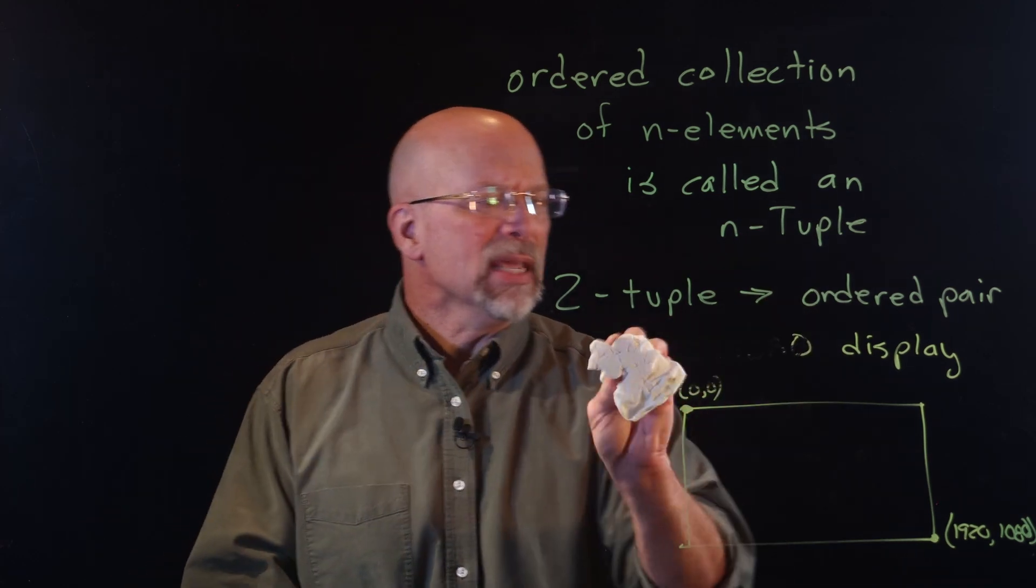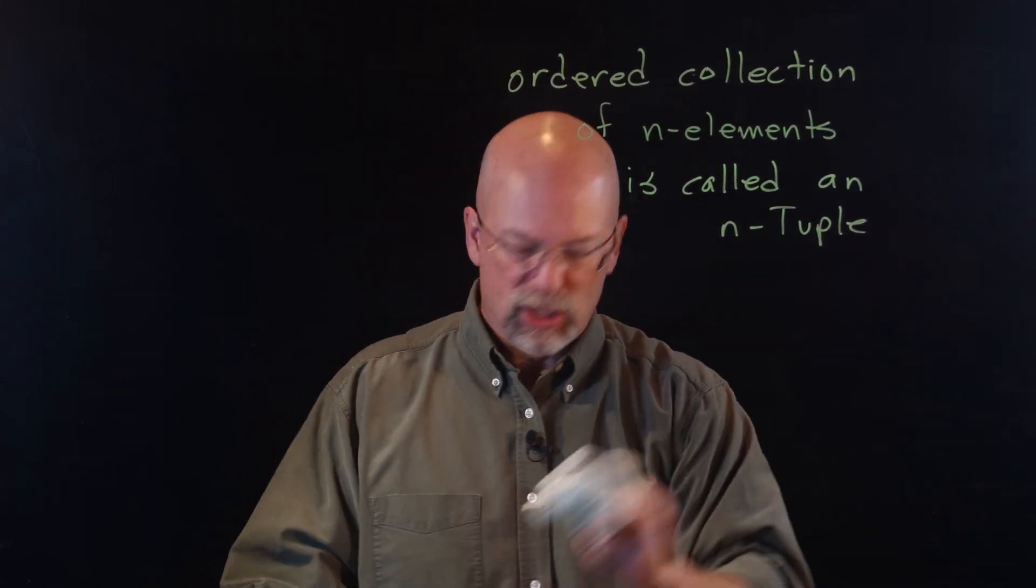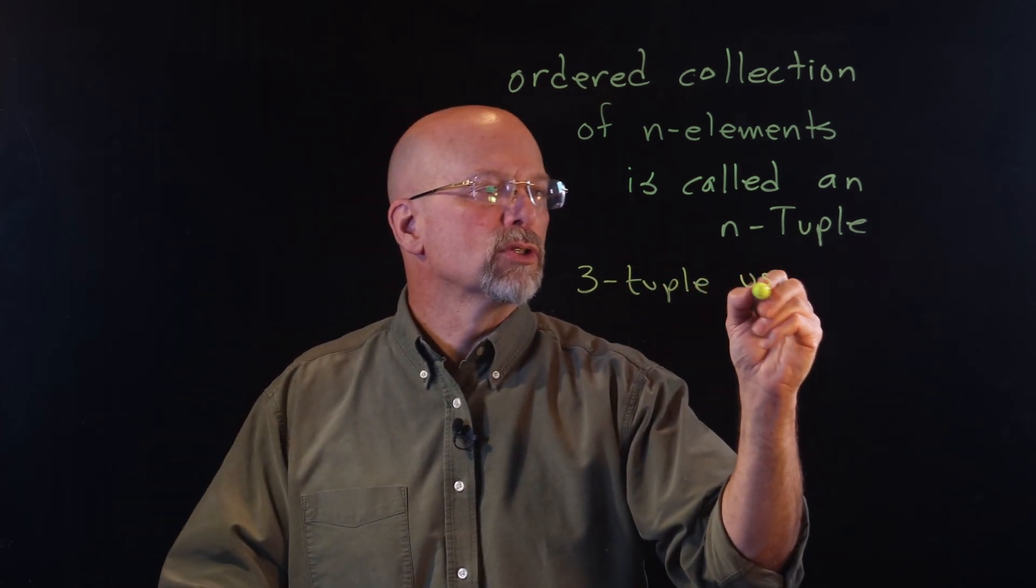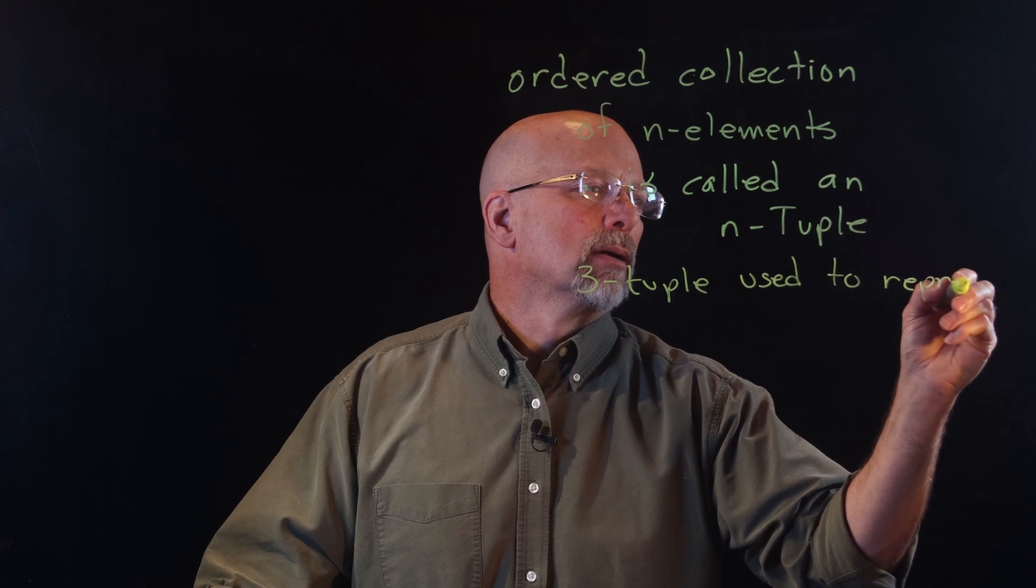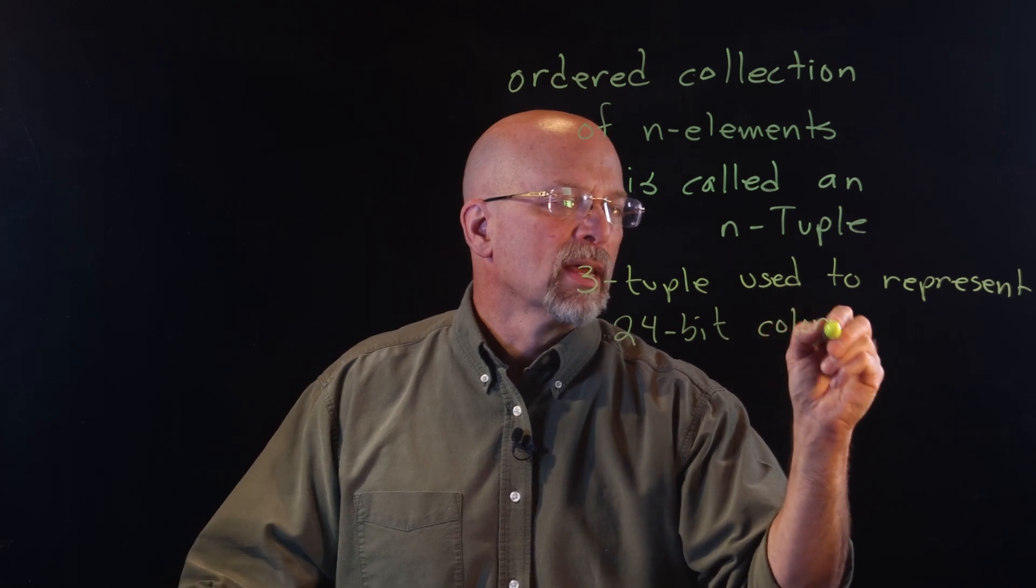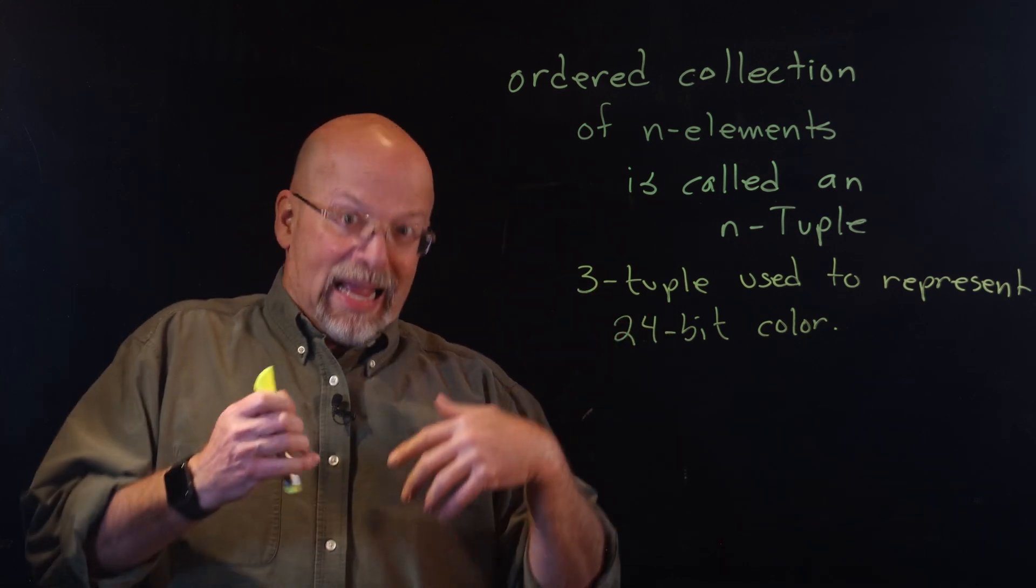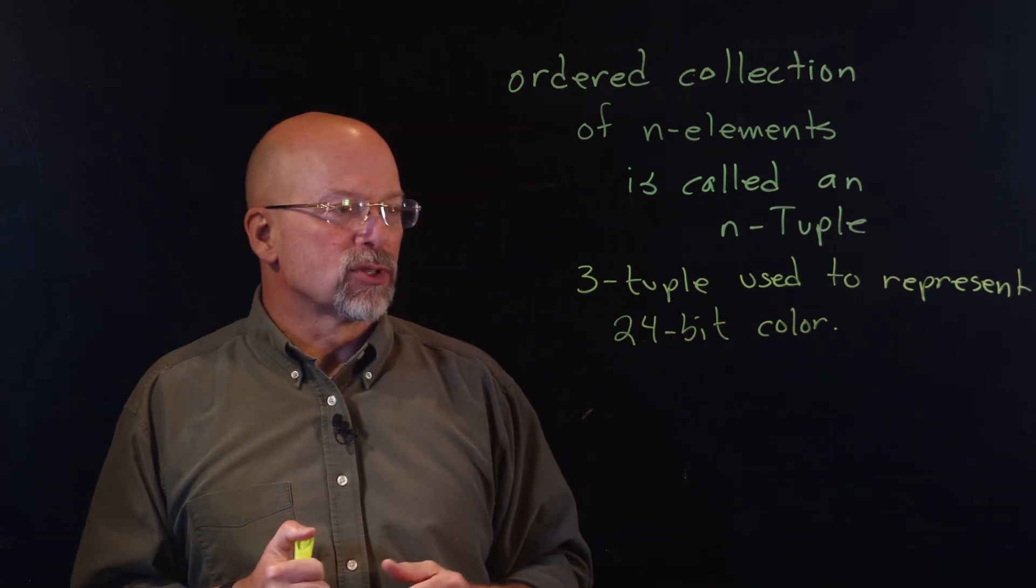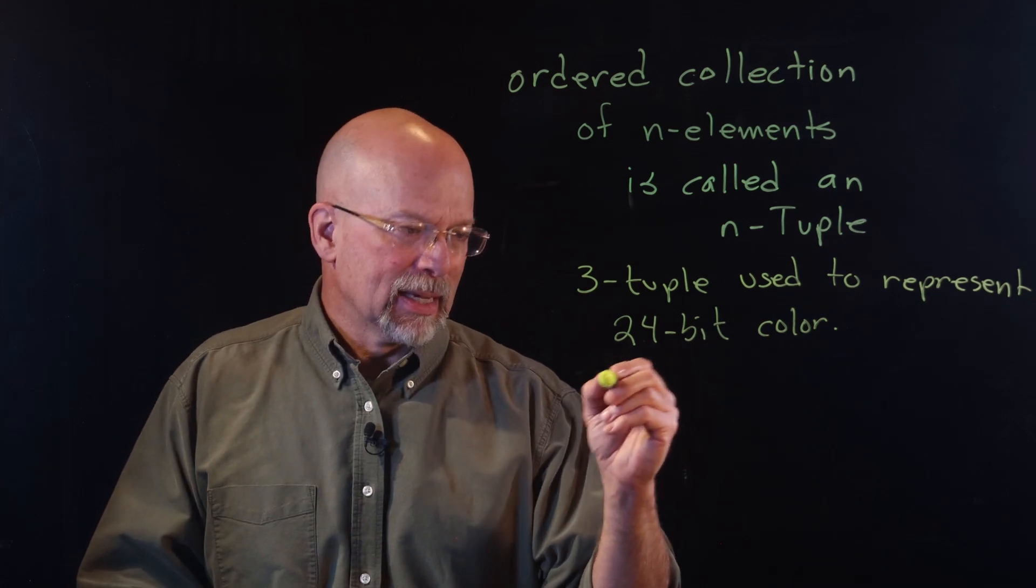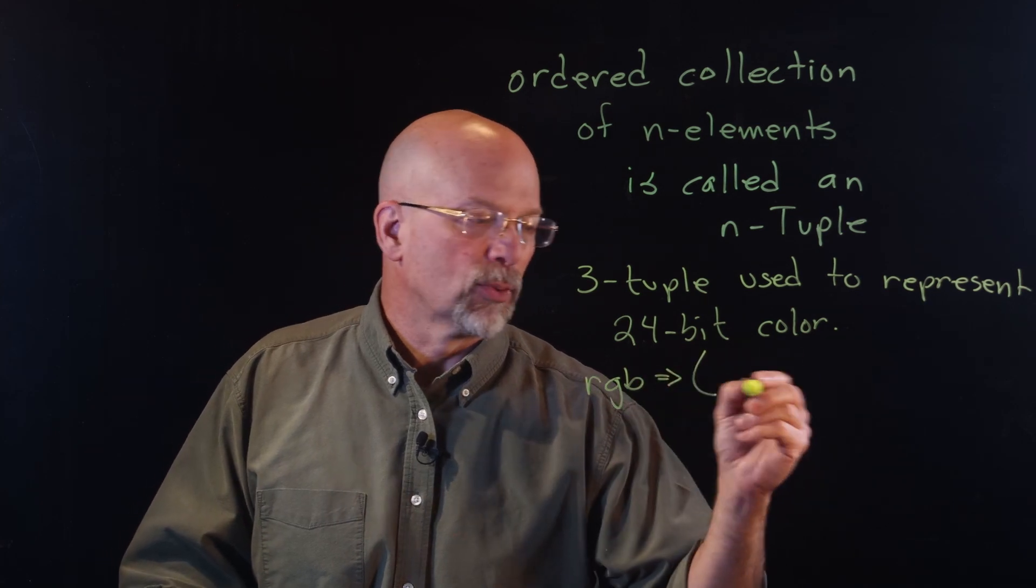But actually, there are many ways of using ordered n-tuples inside of the computer. For example, there is a very common 3-tuple that is used to represent 24-bit color. And there are a number of ways that are used to do this, but making sure that you get your order properly set and get the values set correctly, that is important to making sure you display the color that you want. For example, let's see, if I've got RGB, which means that what I've got is a 3-tuple, a value of red, a value of green, and a value of blue.